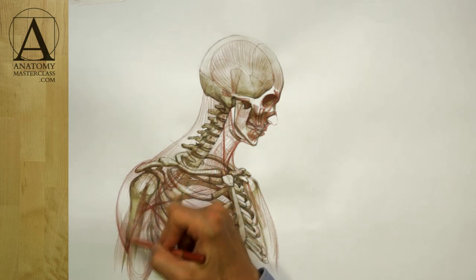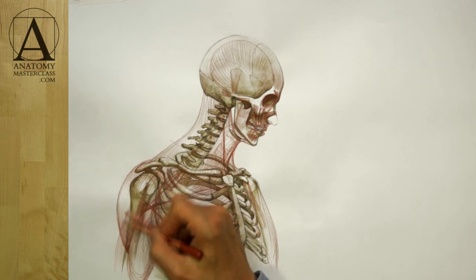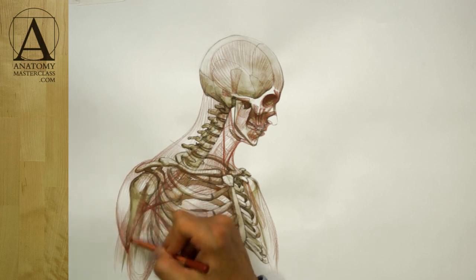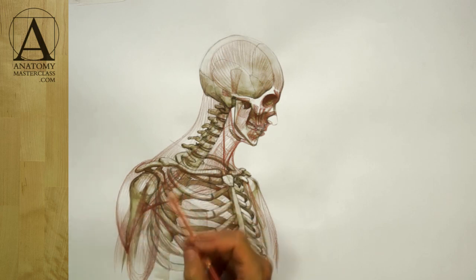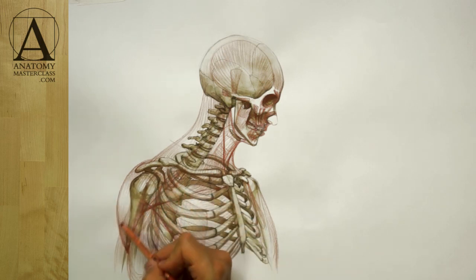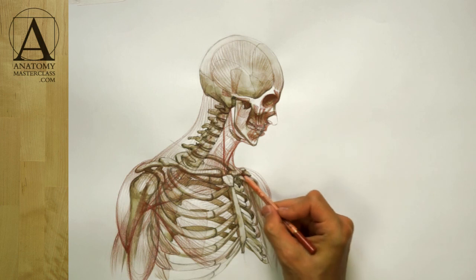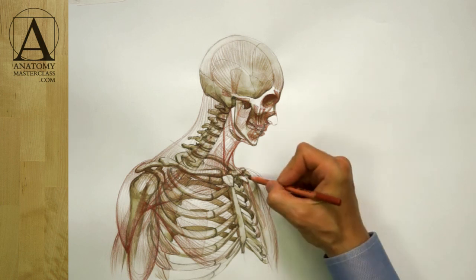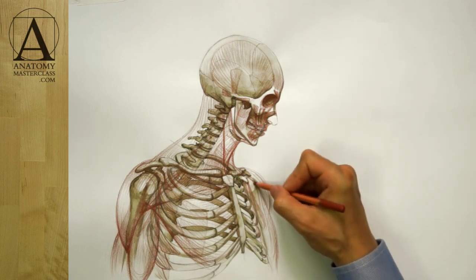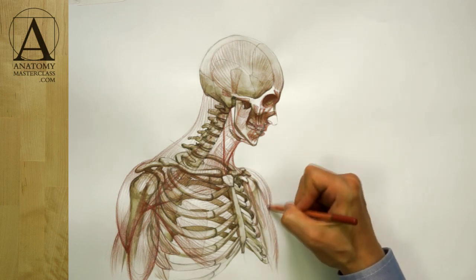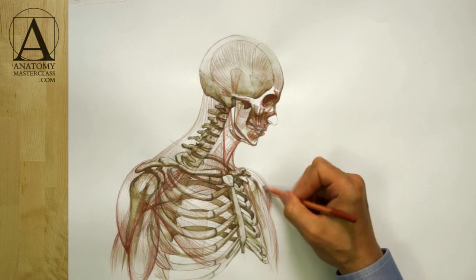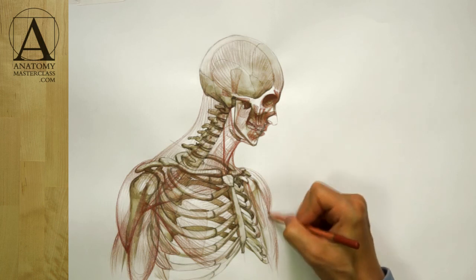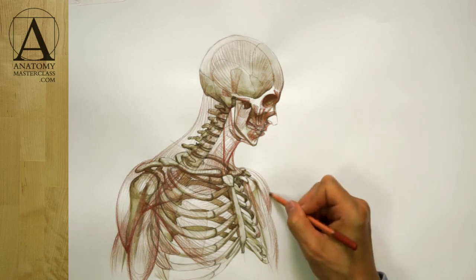This concludes the review of the main muscles of the head, neck, shoulders, and upper torso. In the next video lesson, I will show you how to use this anatomy knowledge for drawing a realistic portrait.